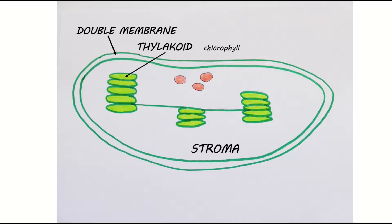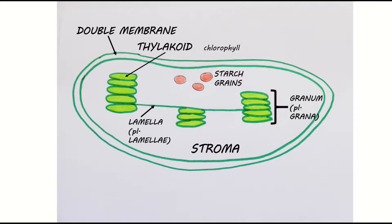The thylakoids are arranged in stacks called grana. So a granum is a stack of thylakoids. Pieces of membrane called lamellae link the grana together. Another thing you might see in a chloroplast are starch grains. The soluble glucose that's made during photosynthesis is immediately converted to starch which is insoluble so that it doesn't affect the water potential of the chloroplast.